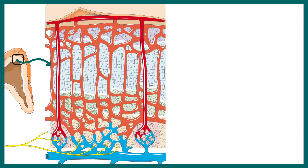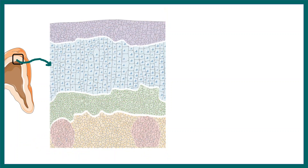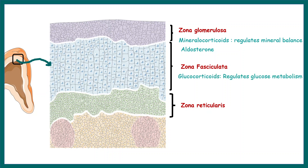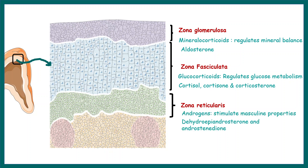The adrenal cortex has at least three layers. The outermost layer is the zona glomerulosa, the middle layer is the zona fasciculata, and the inner layer is the zona reticularis. From the outer layer, mineralocorticoids such as aldosterone are secreted. From the middle layer, glucocorticoids such as cortisol, cortisone, and corticosterone are secreted. From the zona reticularis, androgens such as dehydroepiandrosterone and androstenedione are secreted.